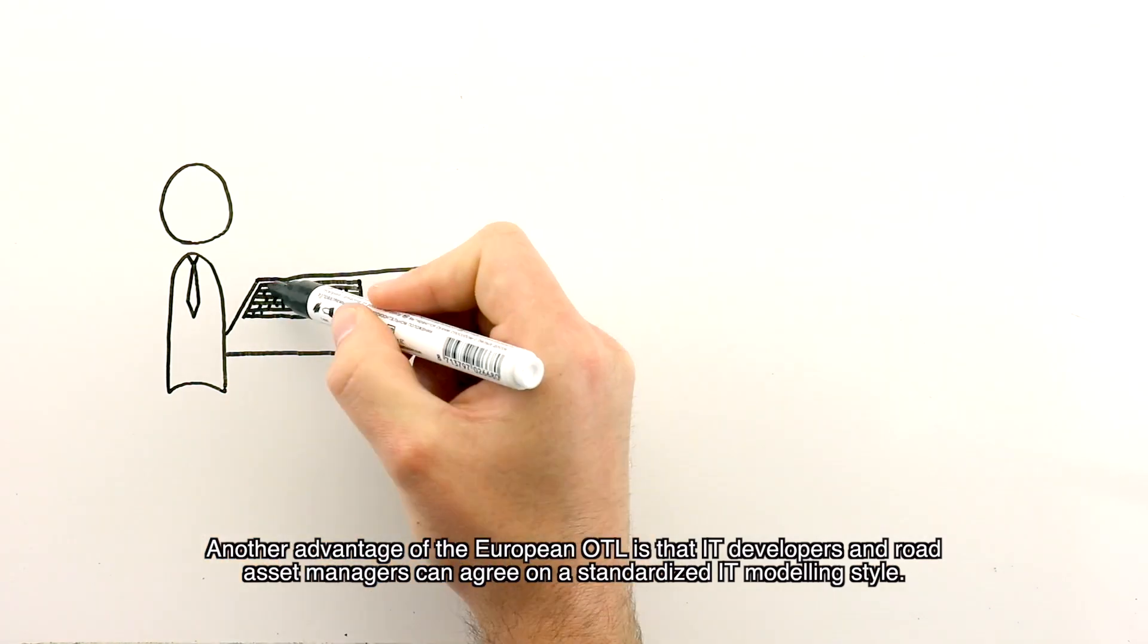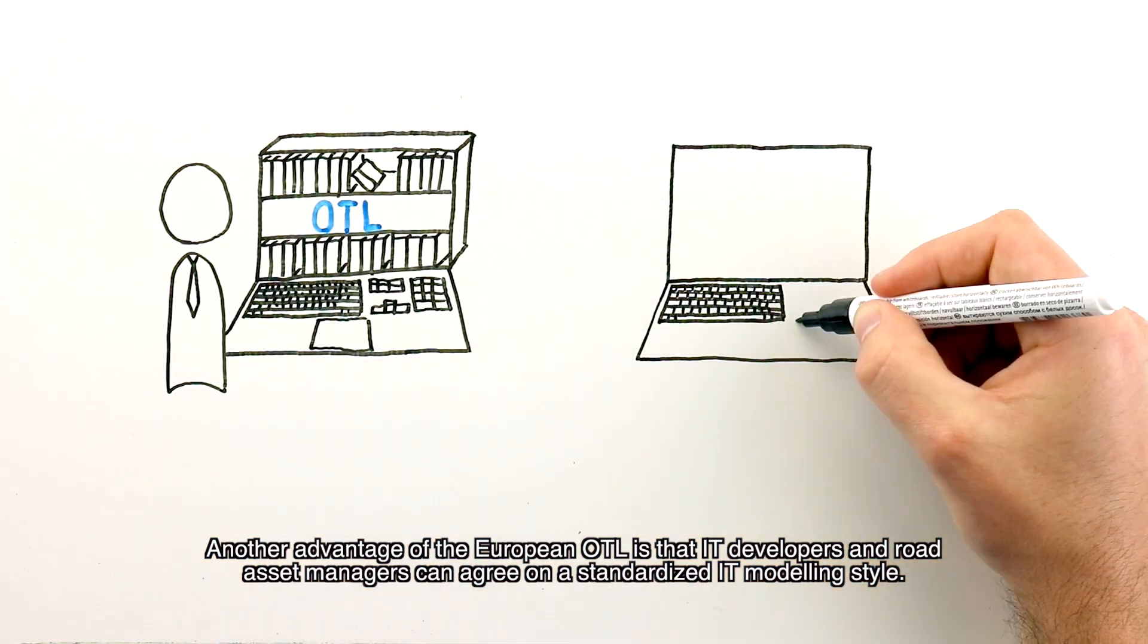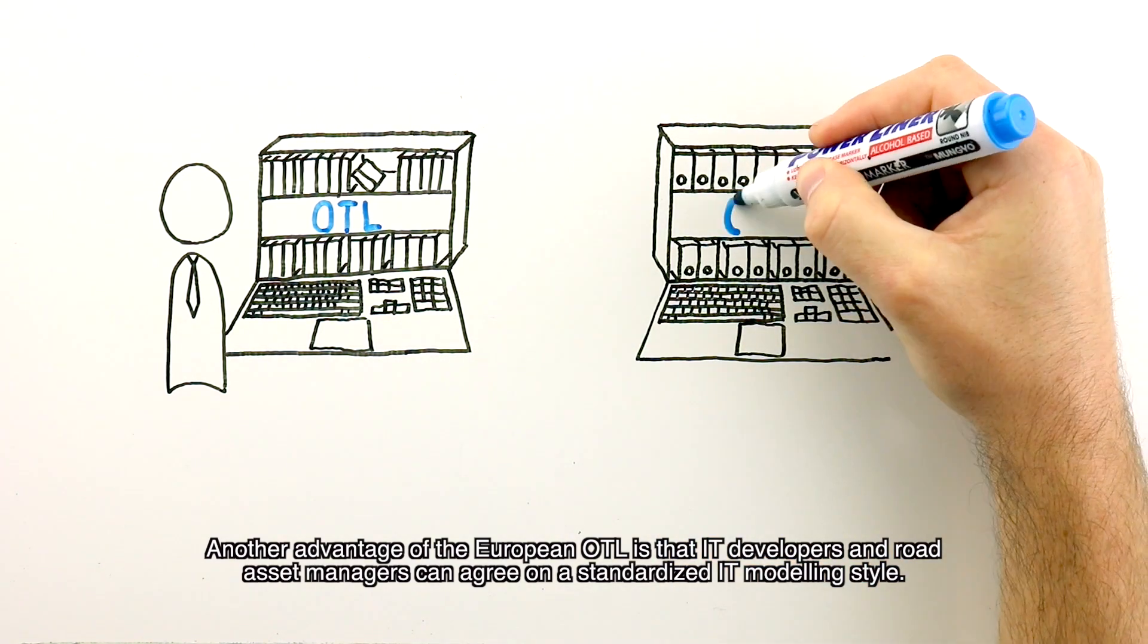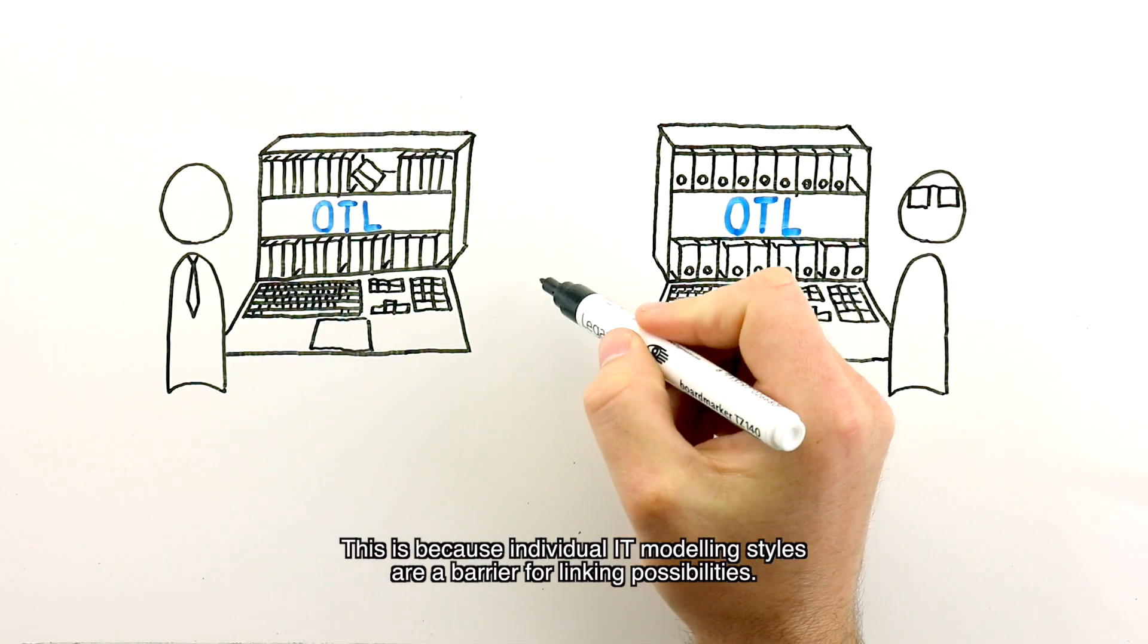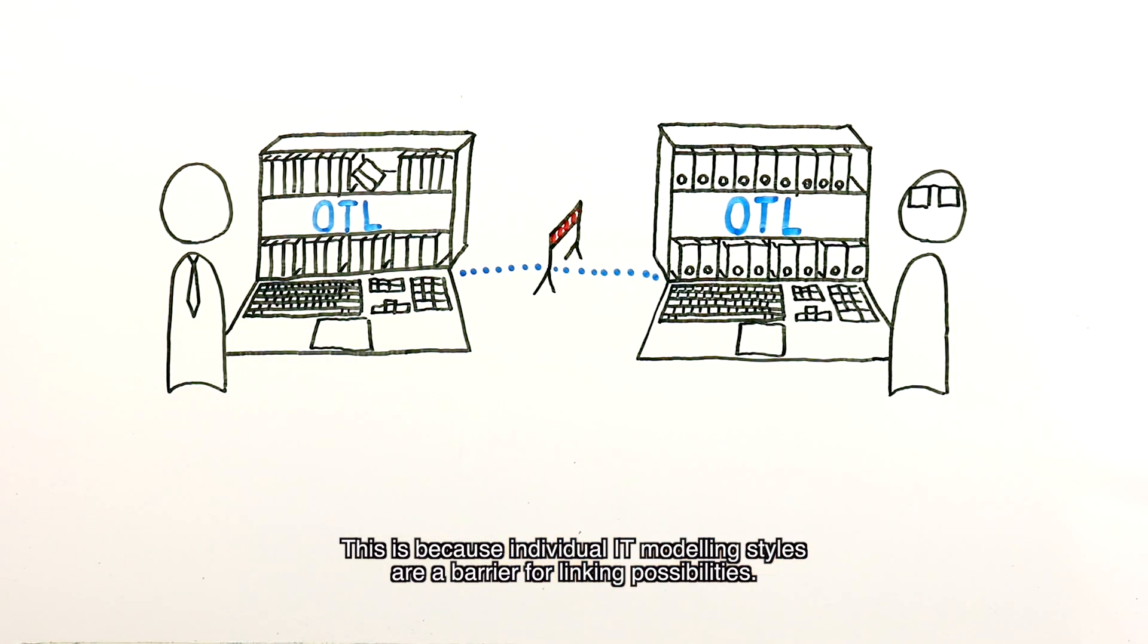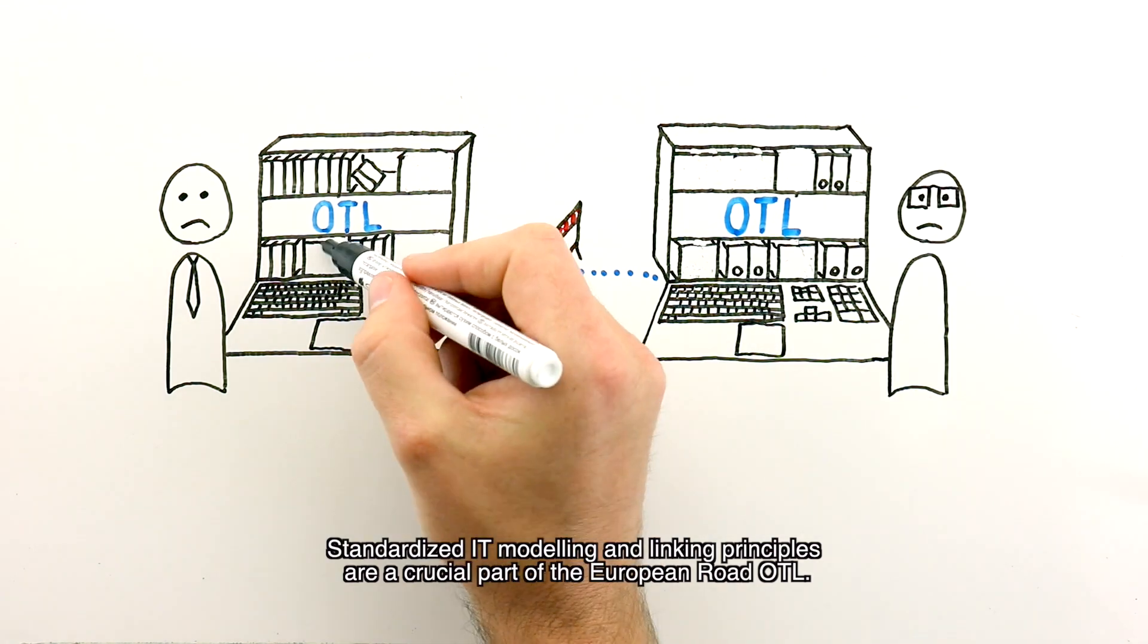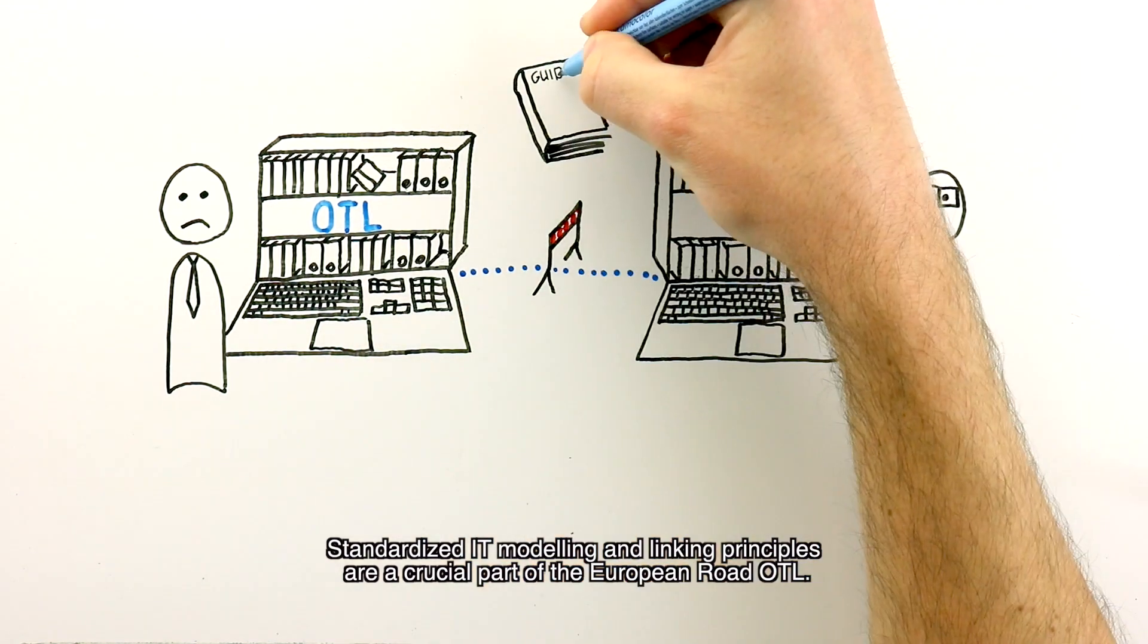Another advantage of the European OTL is that IT developers and road asset managers can agree on a standardized IT modeling style. This is because individual IT modeling styles are a barrier for linking possibilities. Standardized IT modeling and linking principles are a crucial part of the European Road OTL.